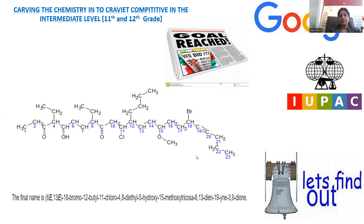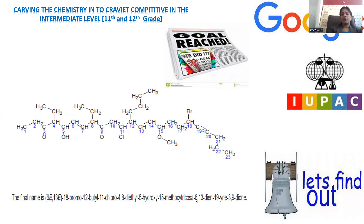To summarize the IUPAC naming process: first determine the direction of numbering by giving the highest priority functional group (ketone) the lowest locant. Then assign numbers to all functional groups. List them alphabetically with their carbon positions, followed by the parent chain length (tricosa for 23 carbons), diene, yne, and the principal functional group (dione). This step-by-step approach makes even a 23-carbon chain manageable.